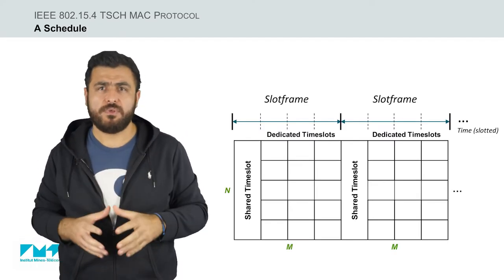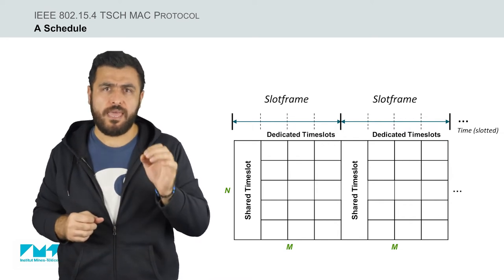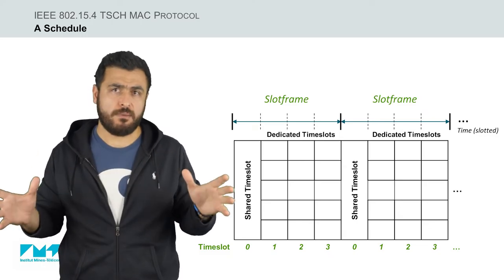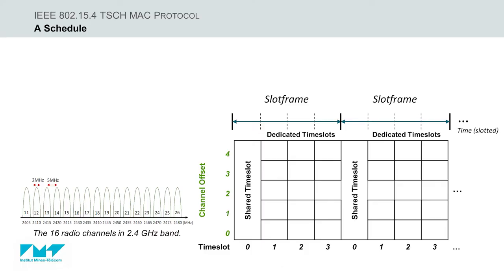The schedule can be represented as an M multiplied by N matrix, where M is the length of the slot frame in time slots and N is the number of available radio channels to hop, as you can see here.